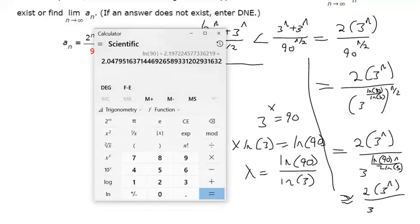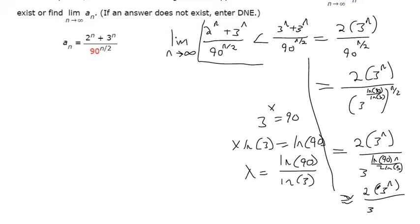So we get 2.04. So this is almost equivalent to 2 times 3 to the nth over 3 to, let me get 2.04, so like 2.05 to the nth.